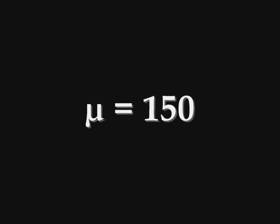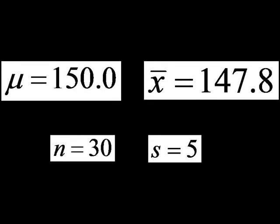You believe the true amount of time is less than 150 minutes, so you conduct a study by randomly sampling 30 users. Your sample shows that the average time spent watching videos for these 30 people is just 147.8 minutes per week. So the sample statistic is x-bar, which is 147.8 minutes. Your sample size was 30, so n equals 30, and the standard deviation of your sample data is s equals 5 minutes.